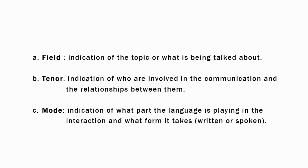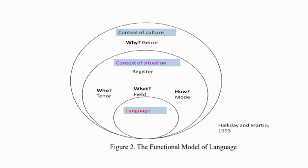Field is the indication of the topic of what is being talked about. Tenor is the indication of who is involved in the communication and the relationship between them. Mode is the indication of what part language is playing in the interaction — what form it takes, whether written or spoken. These three register variables are used to explain how individuals use different resources, different kinds, and different parts from the system of language.